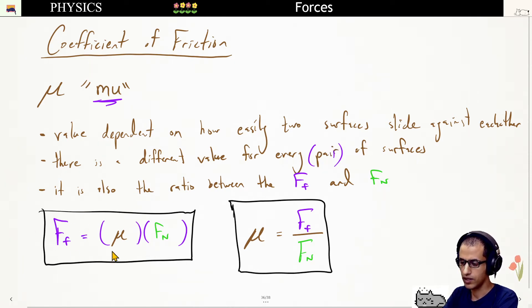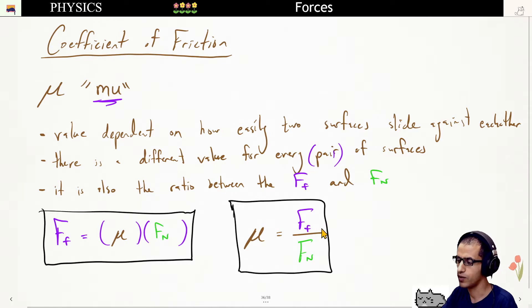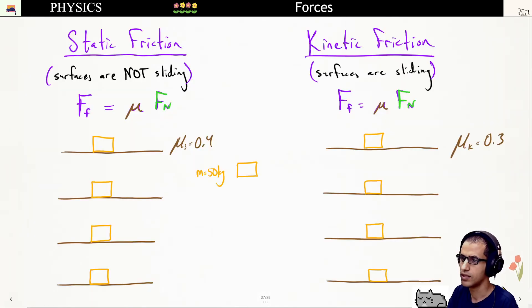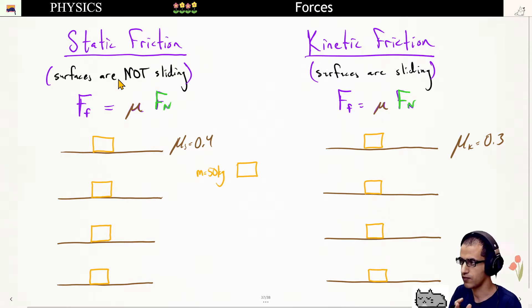From the equation we can solve for mu, and we'll see that mu is actually a ratio between the two forces, which is also why the coefficient of friction has no unit — the newtons in the numerator and denominator cancel out. There are also two types of friction: static friction and kinetic friction. Static friction is when the two surfaces are not sliding against each other, whereas kinetic friction occurs when the surfaces are sliding.